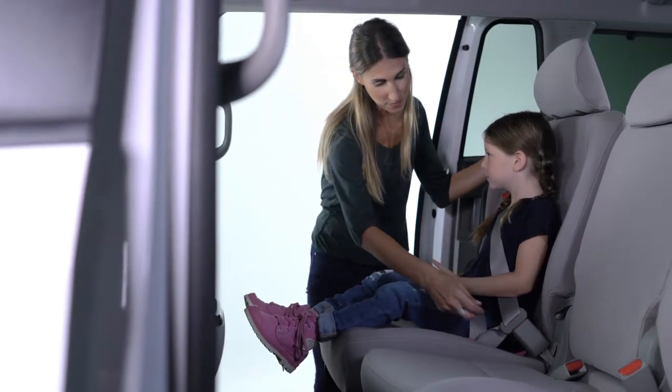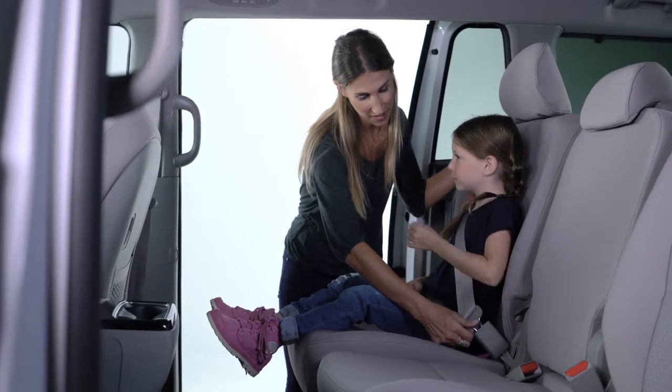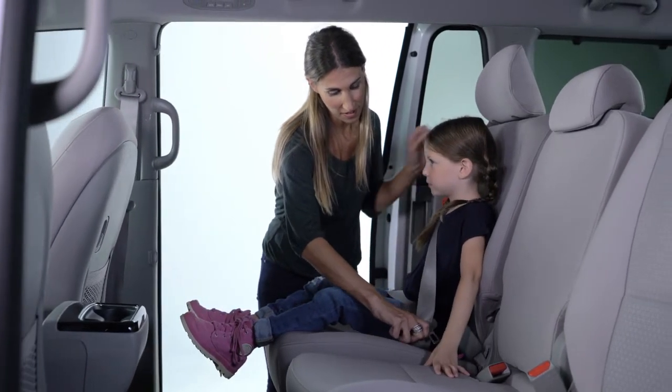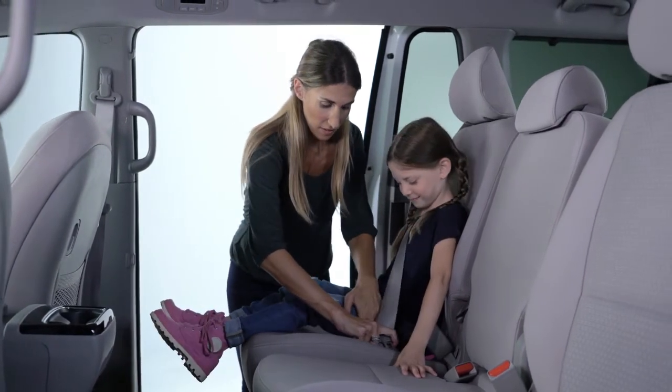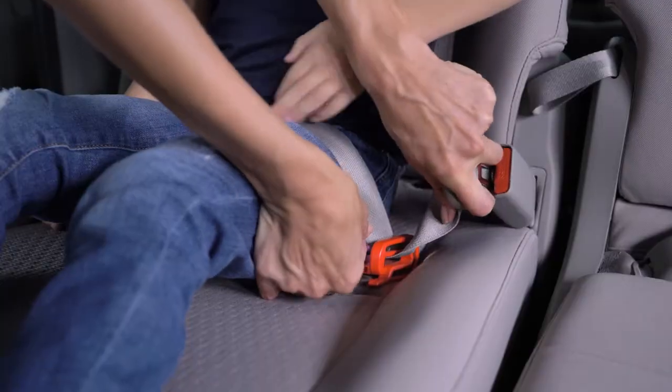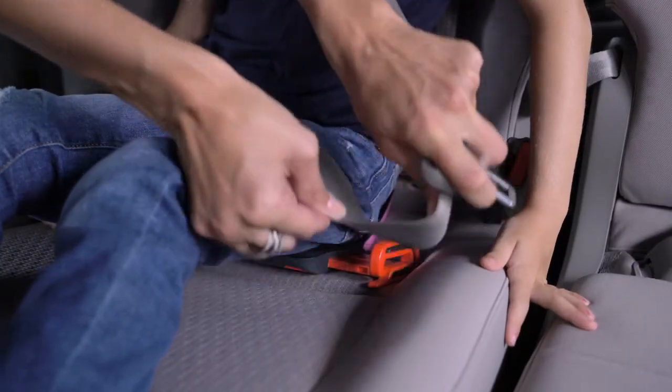To remove the child, unbuckle the vehicle lap and shoulder belt. Slide the lap portion of the seat belt out of the lap belt guide on the buckle side. To remove the lap belt from the belt guide, hold it in two hands, slide the seat belt backwards slightly and push it down, then it will slide smoothly and easily out of the guide.